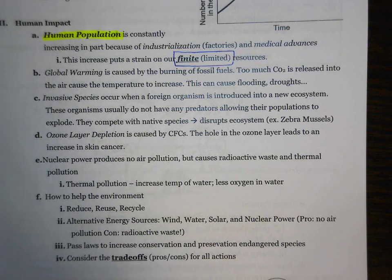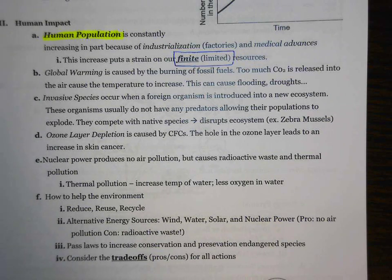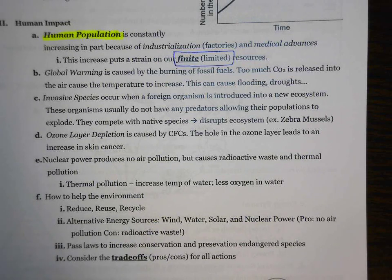Why is the human population increasing so much? That really has to do with industrialization. Remember the industrial revolution that happened in the 1800s? That allowed the mass production of food and goods. Additionally, we've also had a lot of medical advances in recent years, such as antibiotics and vaccines. Those are leading more people to live a longer life and have decreased infant mortality.